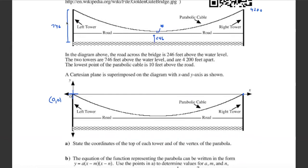Since zero is used for the top of the tower, the water below is at y = negative 746, which is 746 feet down. The road is 246 feet from the water, so its y-coordinate is 746 minus 246, which equals negative 500. So the road is at negative 500.